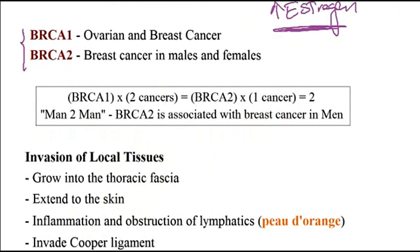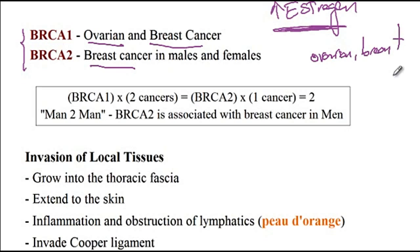Both BRCA1 and BRCA2 gene mutations can cause ovarian and breast cancer in both males and females. However, BRCA1 is more commonly associated with ovarian cancer in females, while BRCA2 is more commonly associated with breast cancer in males.